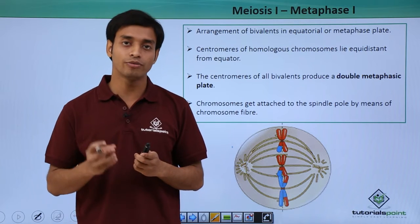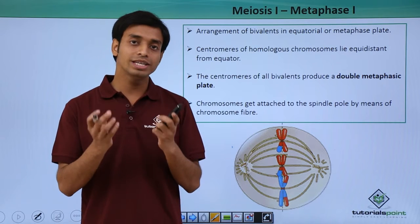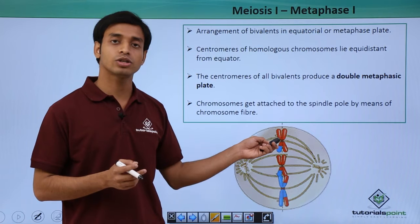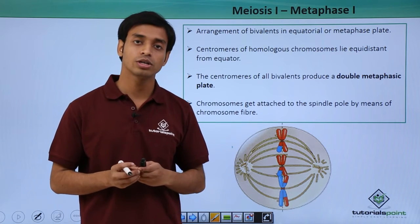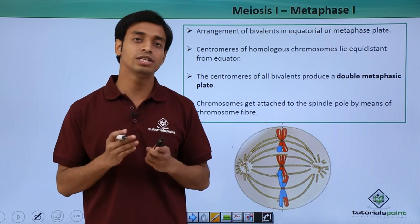From there, microtubule filaments will form and attach themselves to the centromere positions of these homologous chromosomes. Now, slowly and steadily, due to polymerization and depolymerization of these spindle fibers or microtubules, repeated pulling and pushing movement occurs.